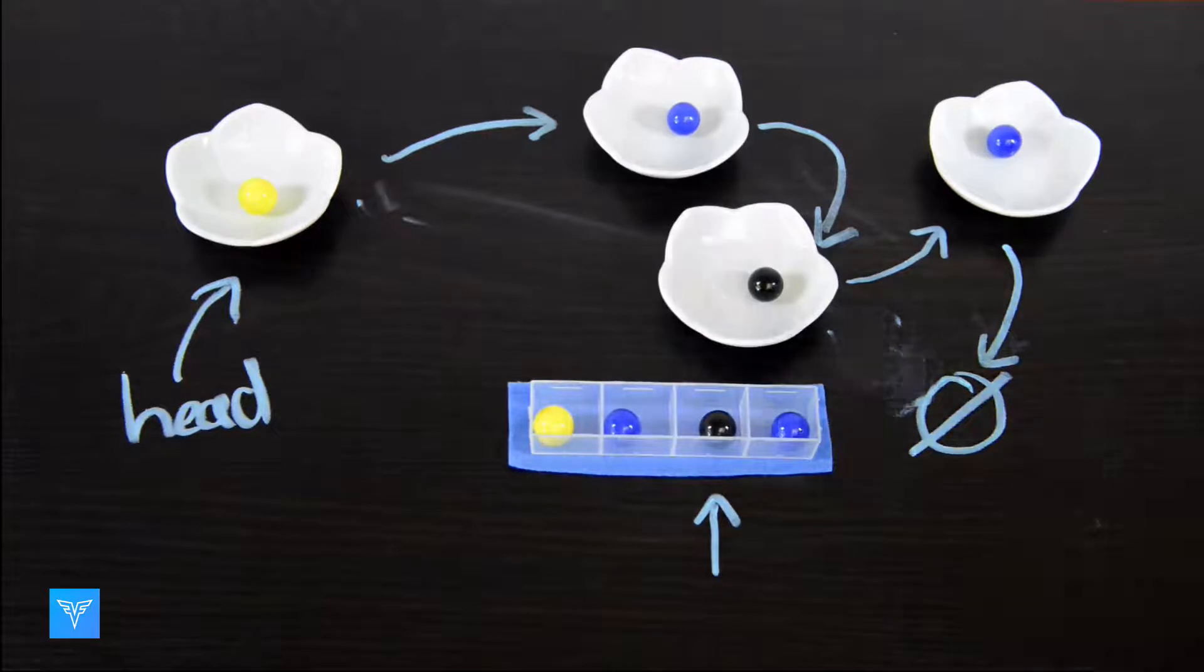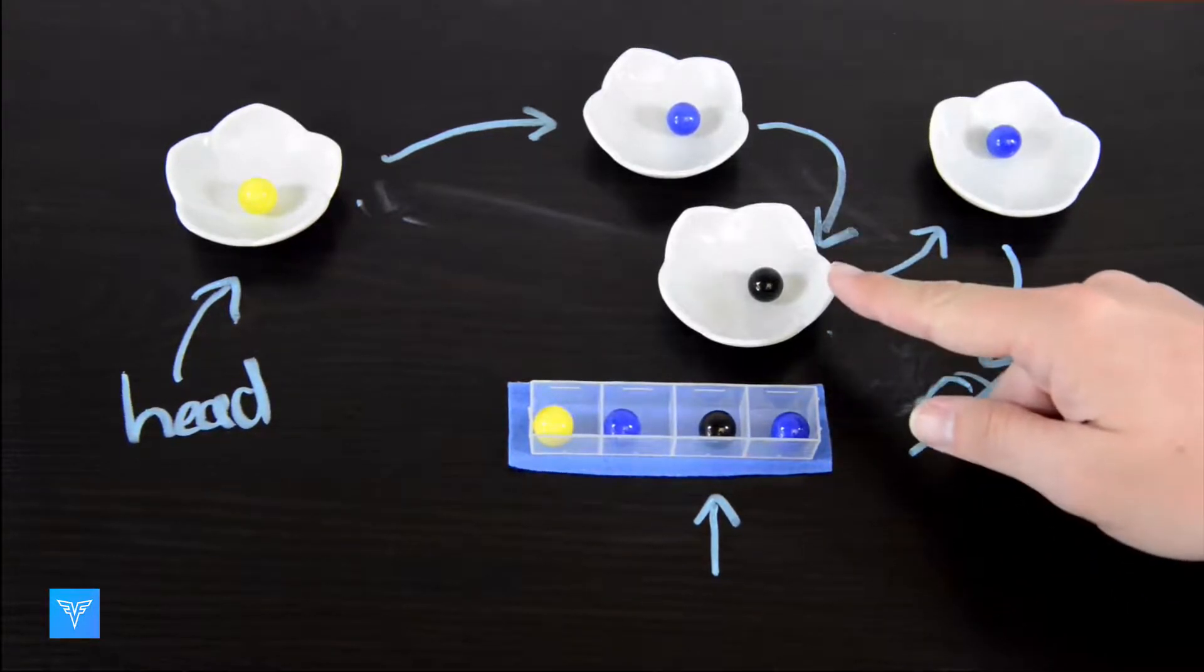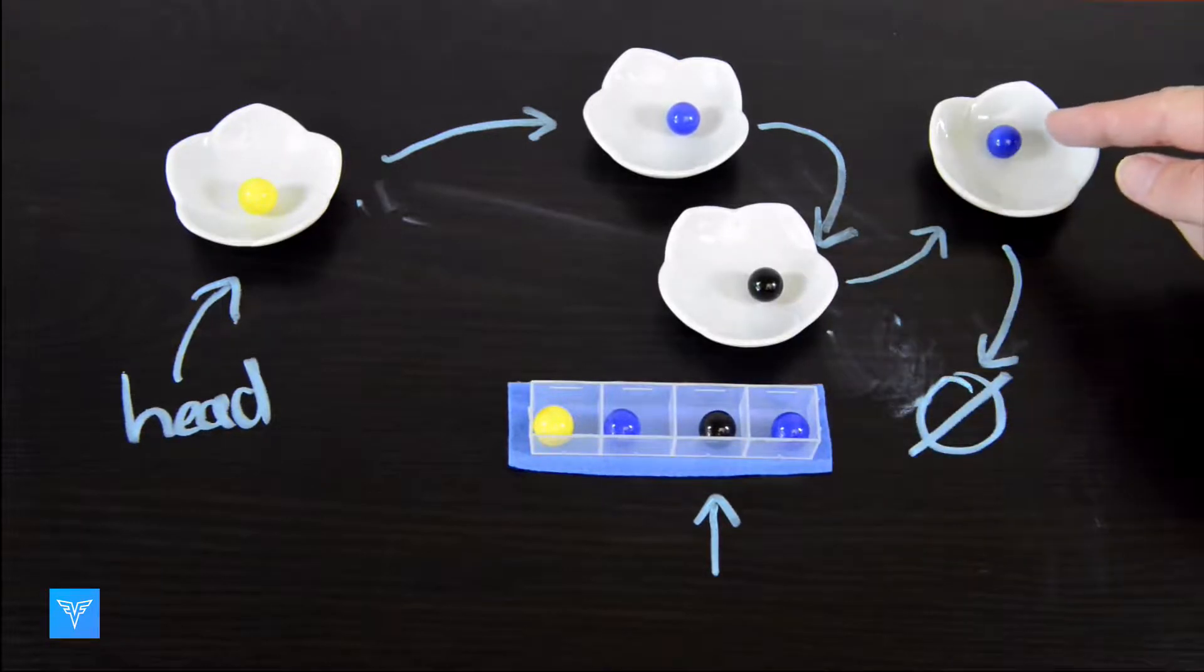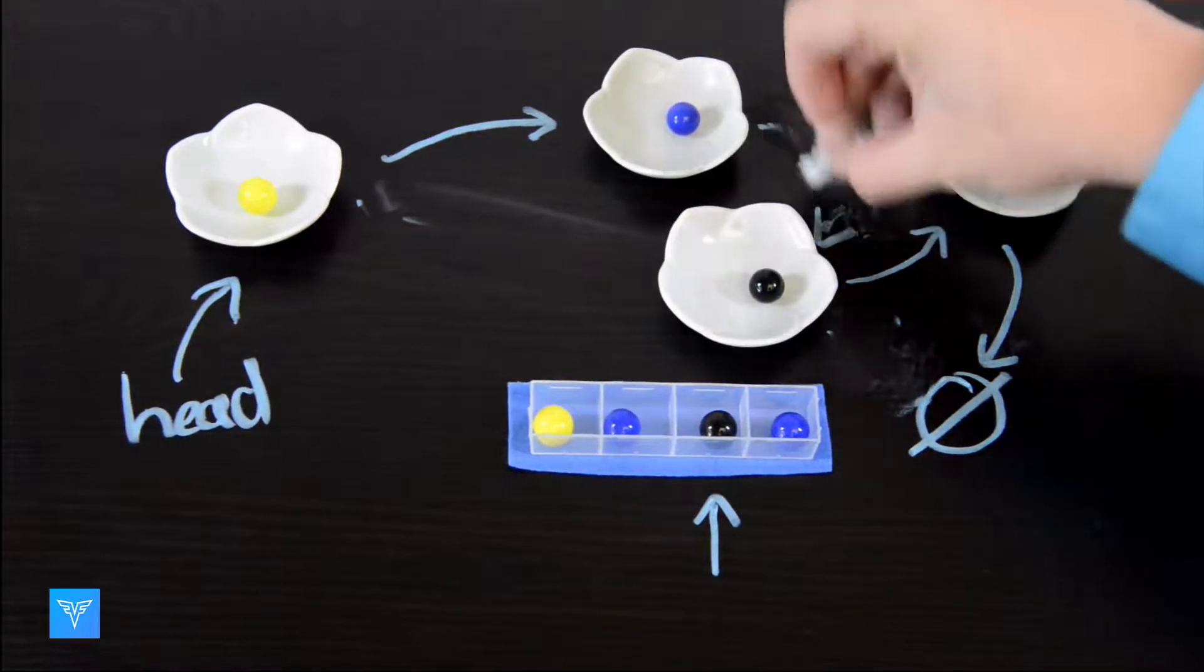To show some other properties of linked lists, let's say we wanted this node with the black marble to be the last element in our linked list, and we wanted this node with the blue marble to be the third node. We can accomplish this without moving any of the nodes in memory, we just have to move the arrows.